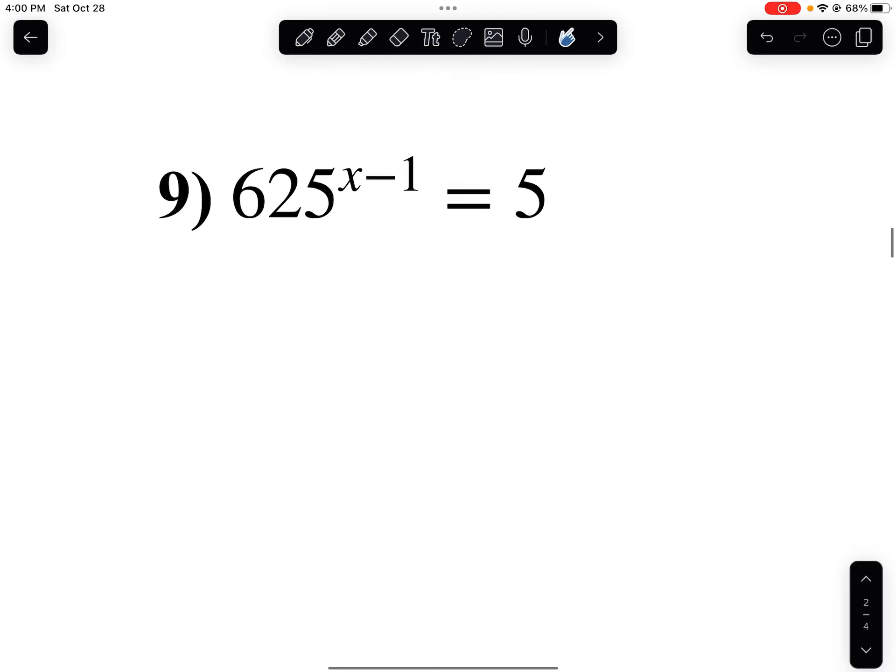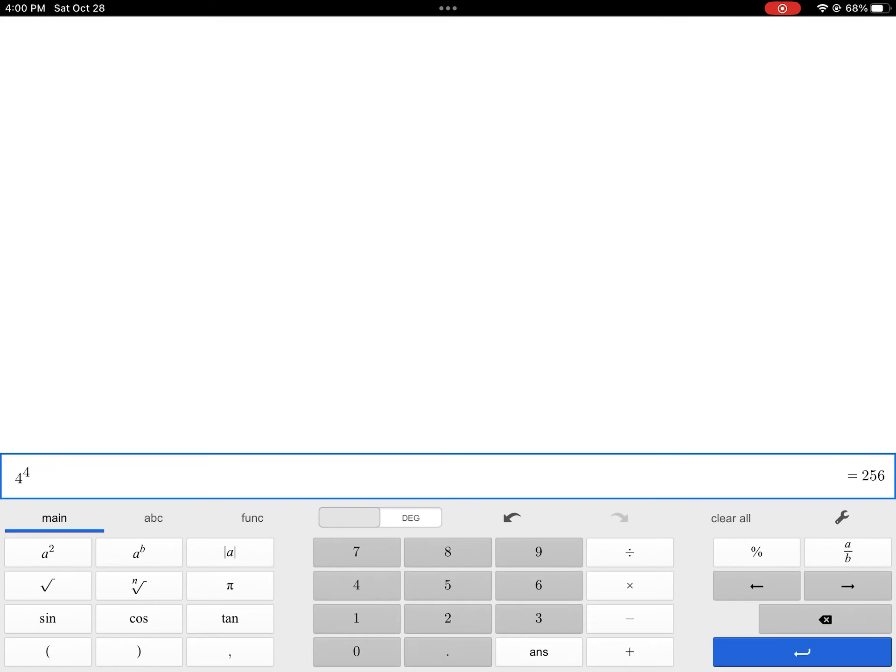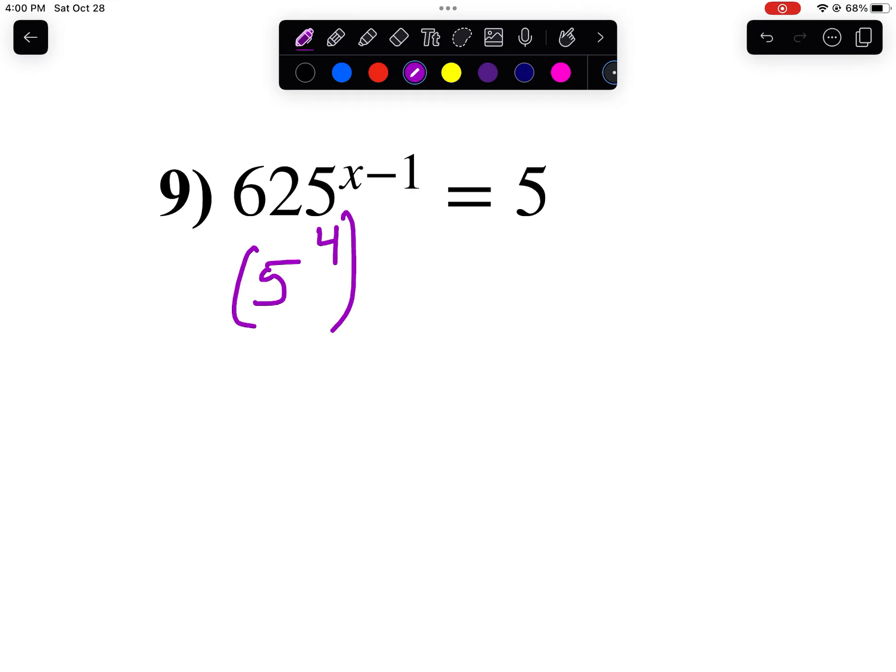Let's take a look at number 9. I want to write 625 as a power of 5. So 5 to the 3rd is 125. So 5 to the 4th is 625. You can verify that with your calculator if you want. So if we take 5 to the 4th power, it's 625. So I'll take 5 to the 4th to the x minus 1 equals 5. We'll put that 1 in here just to verify it. And then to get a power to a power, I multiply the exponents. So I get 5 to the 4x minus 4 equals 5 to the 1st.